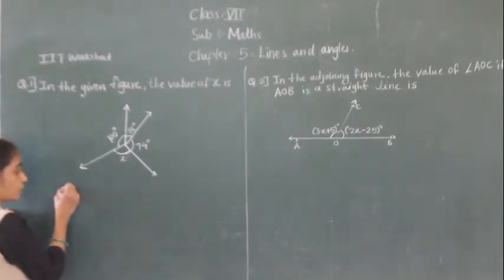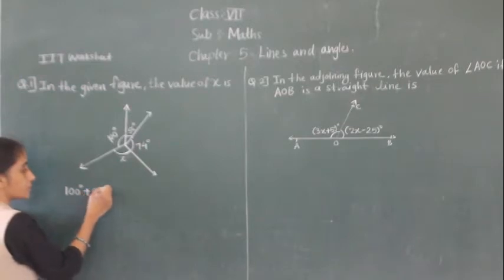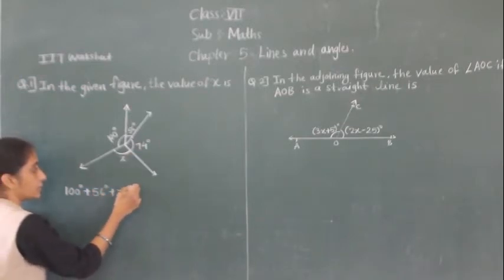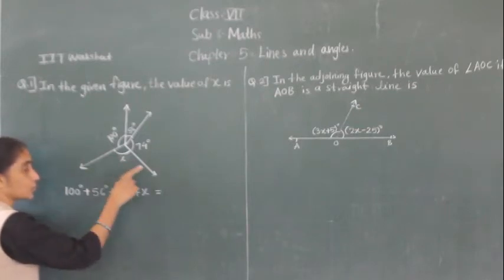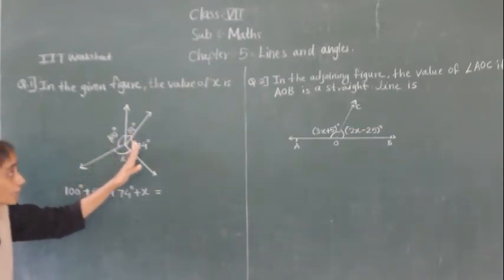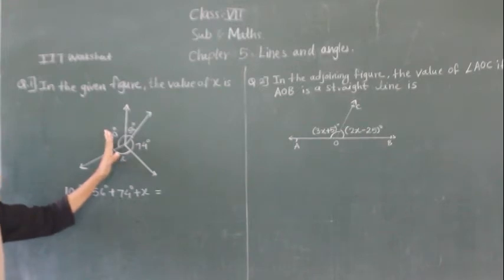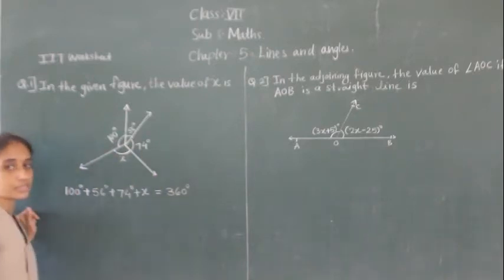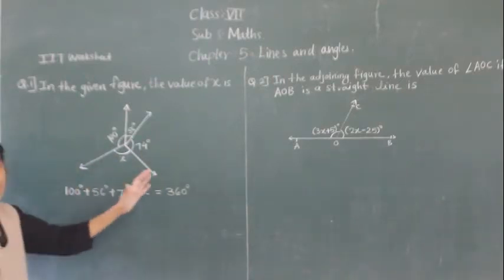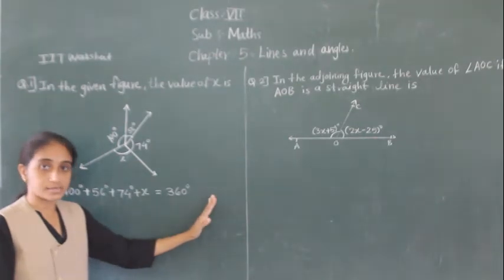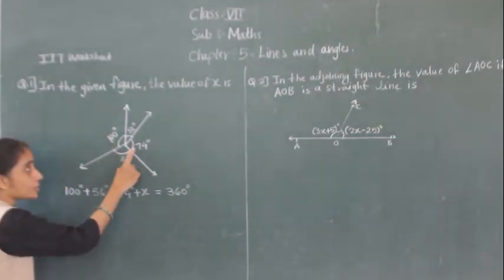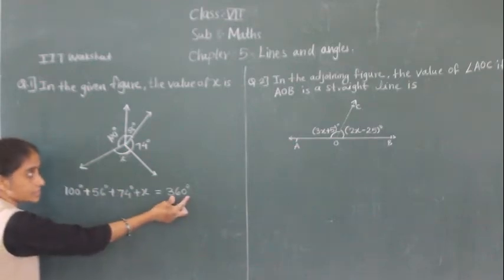What we have to write first: 100 degrees plus 56 degrees plus 74 degrees plus X is equal to 360 degrees. All these angles we have to add are equal to 360 degrees. Why 360 degrees? Because the measure of a complete angle — the whole angle — is 360 degrees. So if we add all the angles, we are going to get 360 degrees.